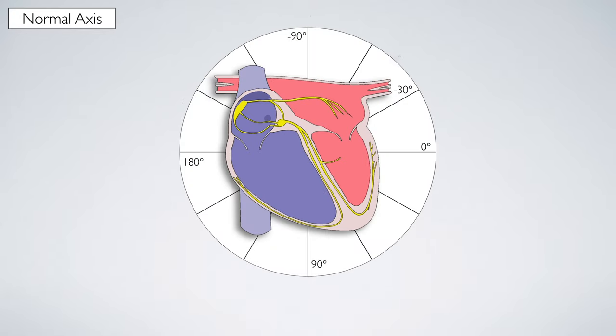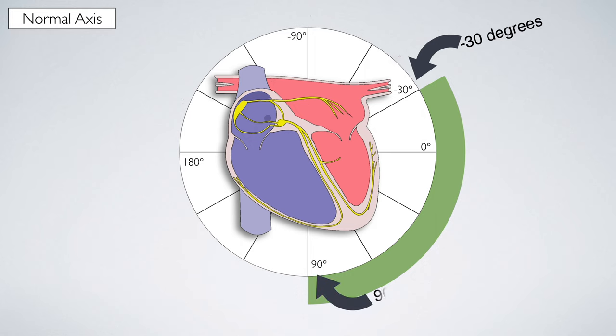It's like having two different lenses to capture the heart's electrical dance from two distinct angles. Now let's move on to the exciting part: calculating the cardiac axis. The normal axis falls between minus 30 and 90 degrees.